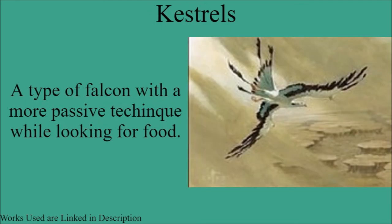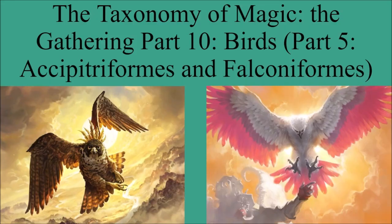The final type of bird for this video are the kestrels. This is a type of falcon with a more passive technique while looking for food than other falcons tend to have. That concludes the tenth part of my Magic the Gathering Taxonomy series, the fifth part on birds. Let me know what you think in the comments down below, and as always, if you enjoyed the video, please leave a like and subscribe, and I will see you all next time.